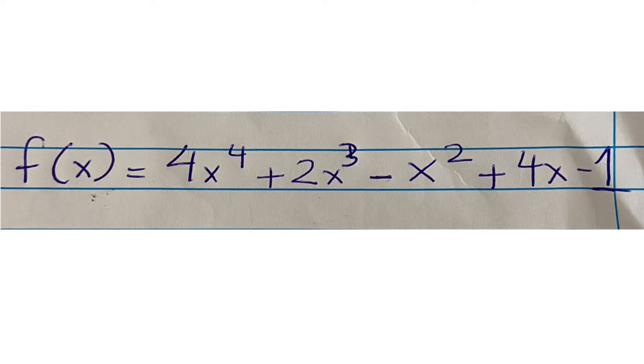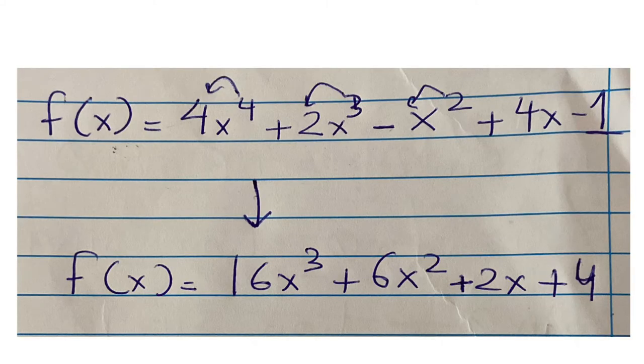It's f(x) equals 4x to the 4 plus 2x to the 3 minus x squared plus 4x minus 1. Now, the way we're going to solve this is, or the answer rather, is 16x cubed plus 6x squared plus 2x plus 4. How do we do this? The superscript 4 on the first function goes down to the 4 and multiplies itself. It's 16, and the superscript gets subtracted by 1. And they are always denoted individually rather than the whole function itself.